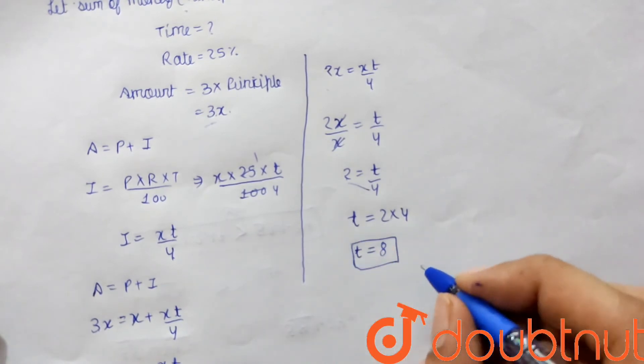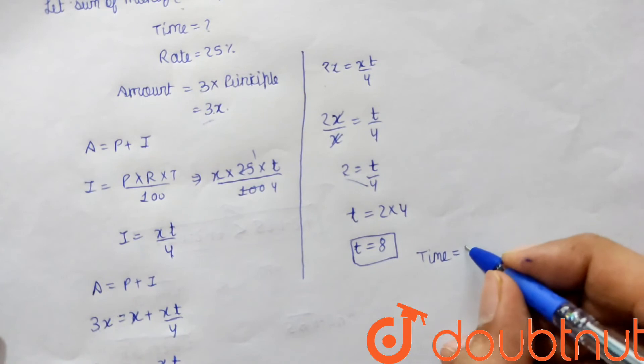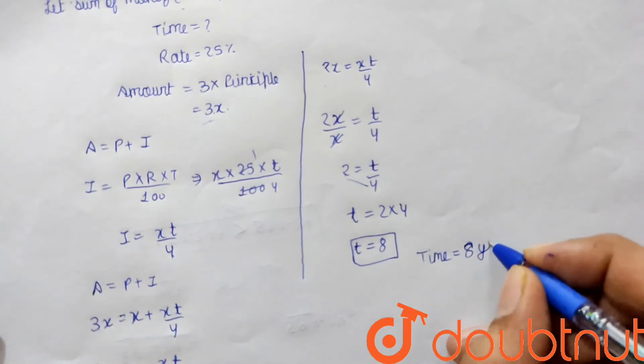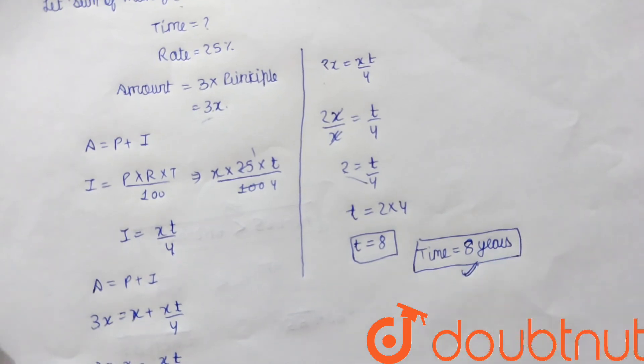So in 8 years, the principal amount will triple itself. This is our required answer.